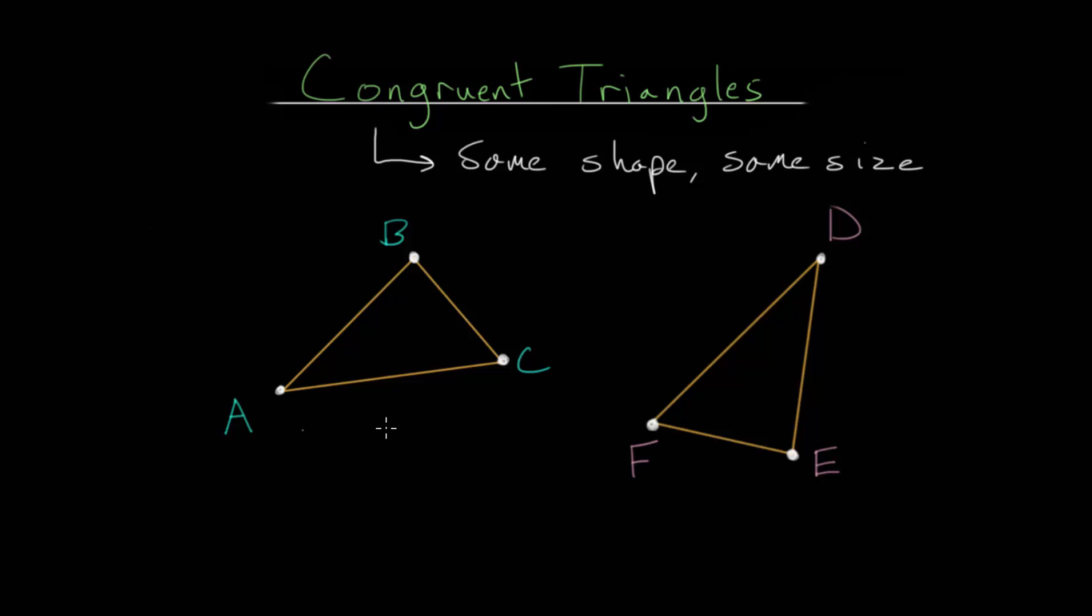So if we start with some triangle and perform transformations on it, like sliding the triangle around (that would be a translation), or rotating the triangle maybe about some fixed point, or if we reflect the triangle about some line,